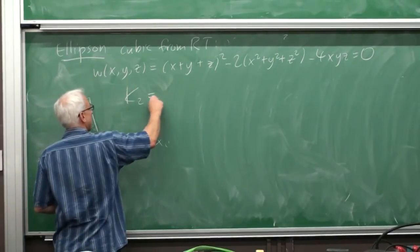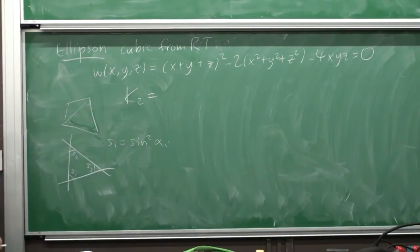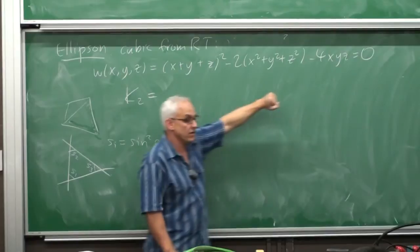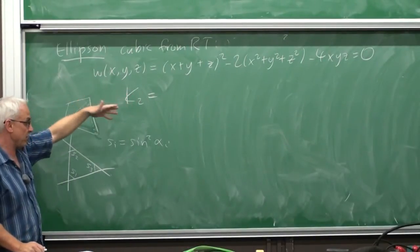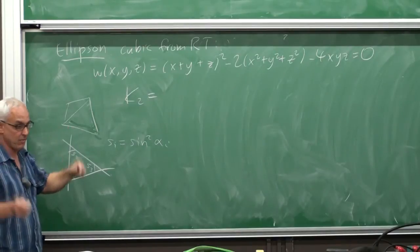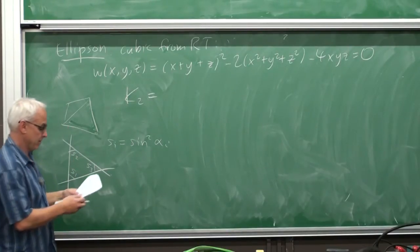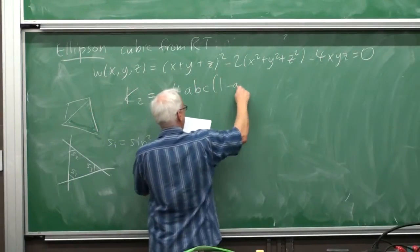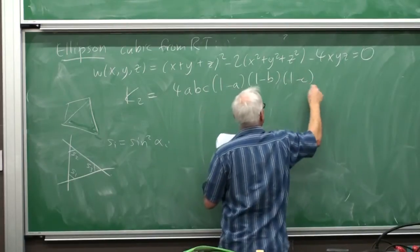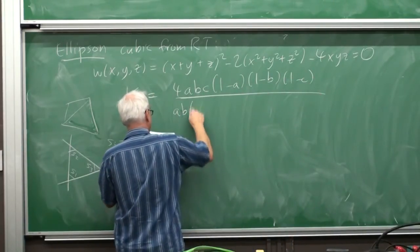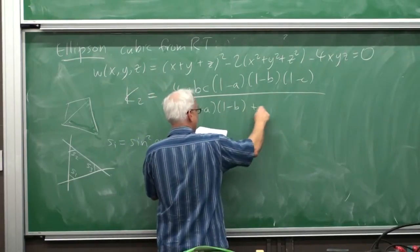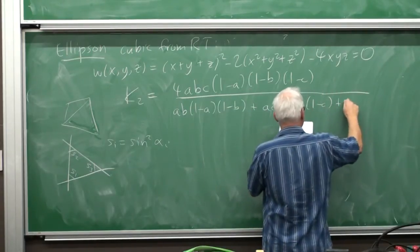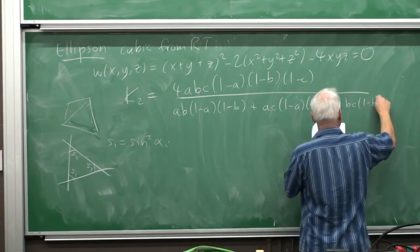The second curvature — the more interesting one — for the ellipson, evaluated at a point (a, b, c), works out to: 4abc(1−a)(1−b)(1−c), divided by ab(1−a)(1−b) + ac(1−a)(1−c) + bc(1−b)(1−c). This comes from expanding out, taking the quadratic terms, and applying the curvature formula.